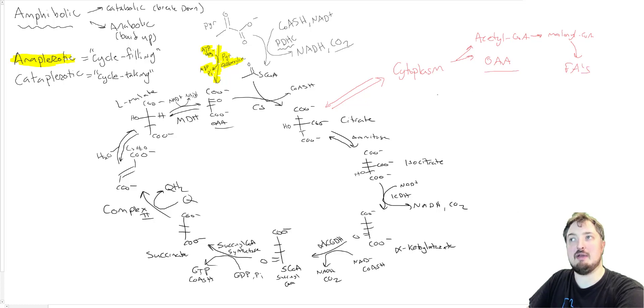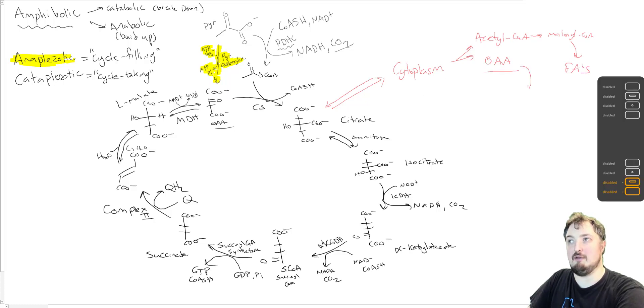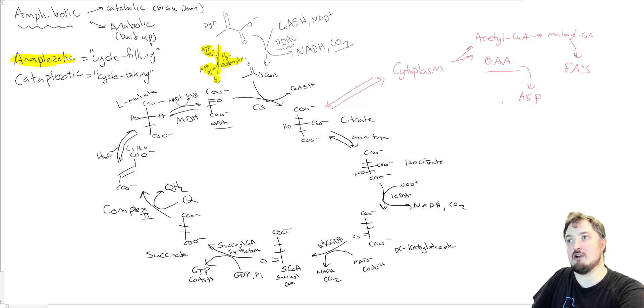And then the OAA out here can be used to make things like aspartic acid. And if you think about the structure of OAA versus something like aspartic acid, the only difference is the fact that OAA has a carbonyl at the alpha position versus a H2N. And so these are typically called aminotransferase enzymes.